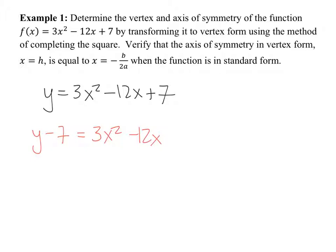The second step: instead of dividing by A, what I'm going to do is factor A out — which is really dividing by A, if you think about it. I'm just not dividing both sides by A; I'm doing the same thing by writing these separately. Watch what I'm going to do.